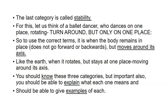The last category is Stability. Think of a ballet dancer who dances on one place, rotating — turning around but only on one spot. To use the correct terms, it is when the body remains in place, does not go forward or backwards, but moves around its axis. Like the earth when it rotates but stays in one place, moving around its axis. You should know these three categories, be able to explain what each one means, and give examples of each.